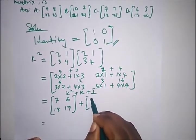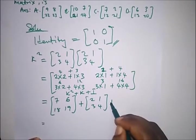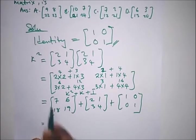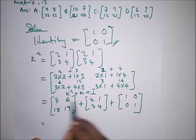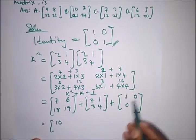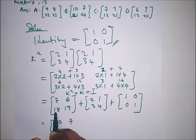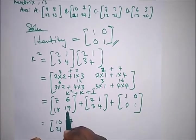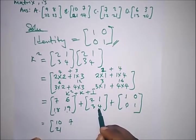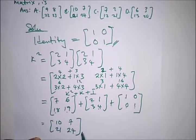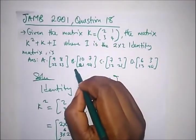This is k squared, k is [2, 1; 3, 4], and the identity is [1, 0; 0, 1]. Adding all together: 7 plus 2 plus 1 gives us 10, 6 plus 1 plus 0 is 7, 18 plus 3 plus 0 is 21, and 19 plus 4 plus 1 gives us 24. Our correct option is option B.